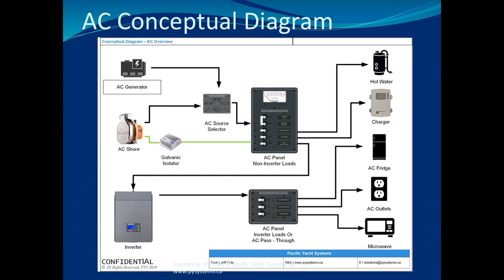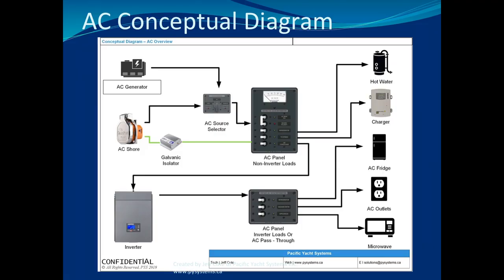The previous slide was about DC distribution — direct current. This slide covers alternating current. What we have here in the room is pretty much all alternating current. You've got a shore power cord, you might have a source selector switch if you have a generator — on my sailboat I don't have a generator, so I don't have a source selector switch. It powers my panel.